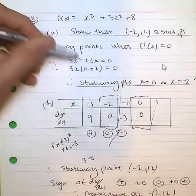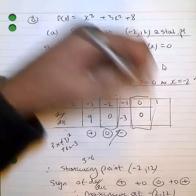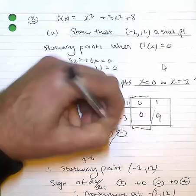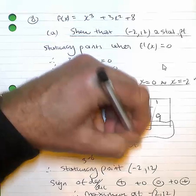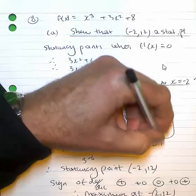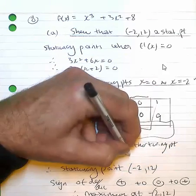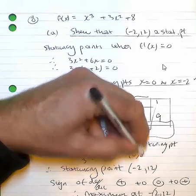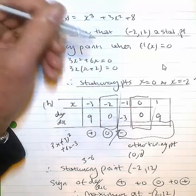In turn, if I was to do that for 1, I would find that would be positive 9. So my other turning point, which is (0, 8), I'm actually doing part C and D here.